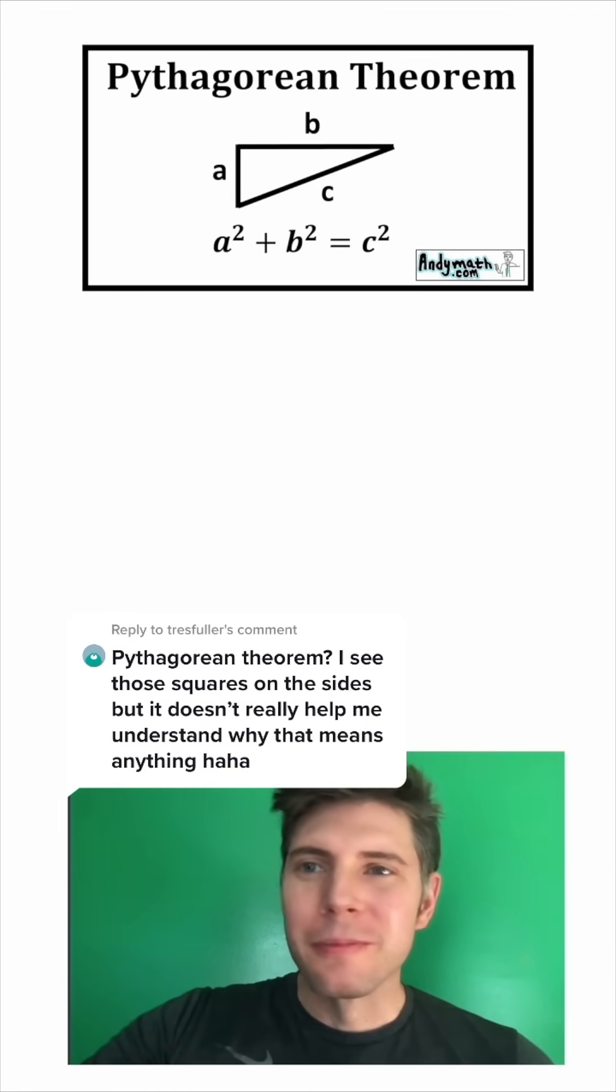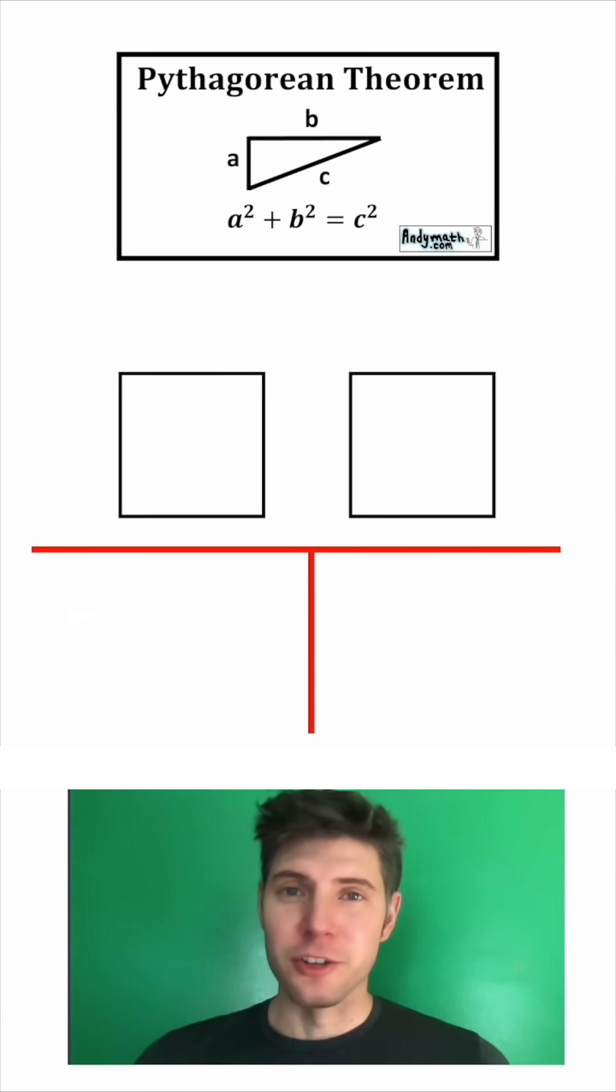This person requested Pythagorean theorem. We start with the square, then we have another square that's the exact same size. So these two squares are equal to each other.